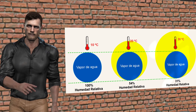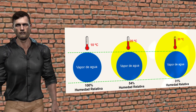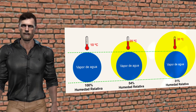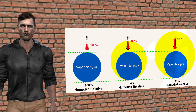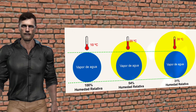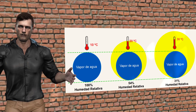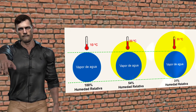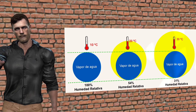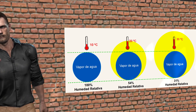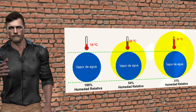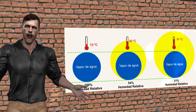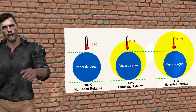Taking this definition into account, a relative humidity of 100% implies that we have reached saturation, and the air no longer admits any more water vapor. Using relative humidity gives us a better view of the humidity present in a process or in a space like our house.